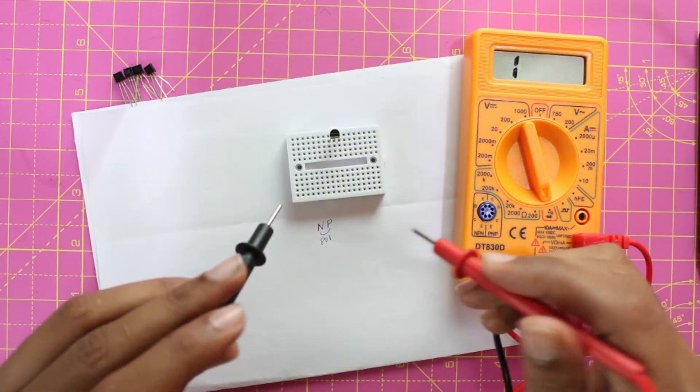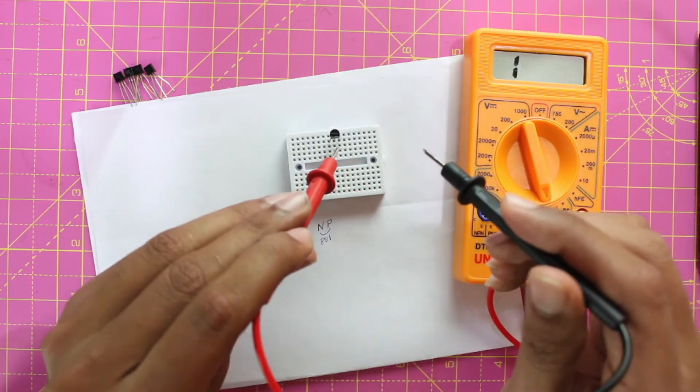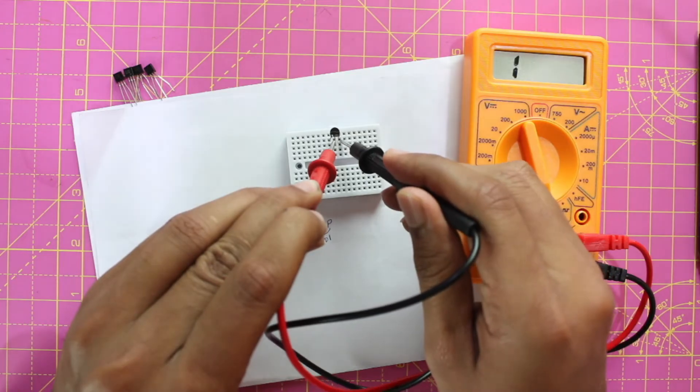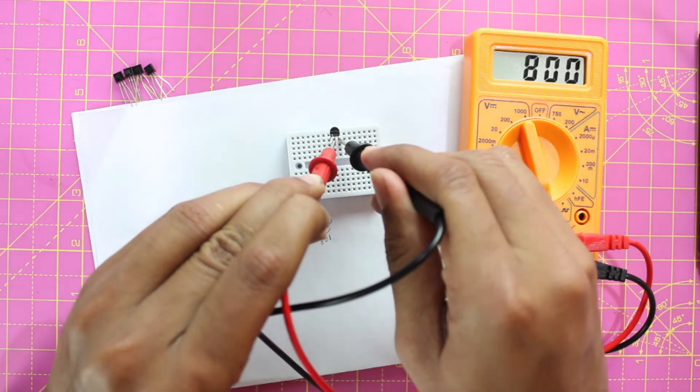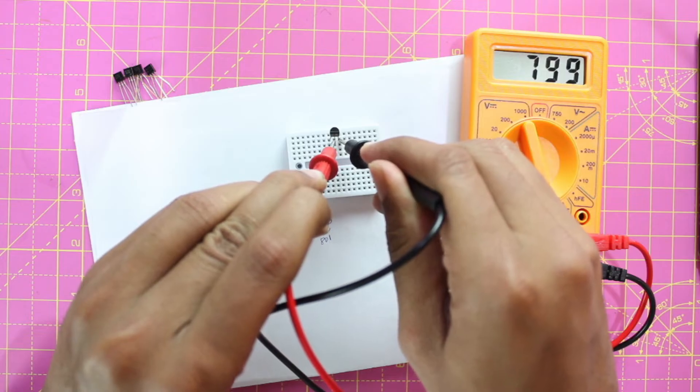Now we have to probe the second two pins. We know that the second pin was P, so we'll place the P here and N here, and we get the voltage drop as 799. So let's write that down: we got P N here and we got 799.